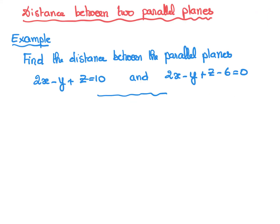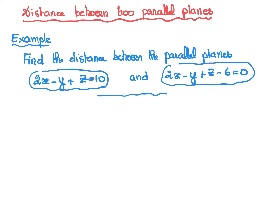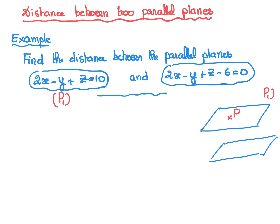Finally, we look at the distance between two parallel planes. The two planes are parallel because they share the same normal vector (2, minus 1, 1). The strategy is to take a point from the first plane P1 and then find the distance from that point to the second plane P2 using the formula we just saw.